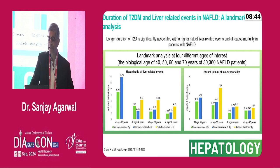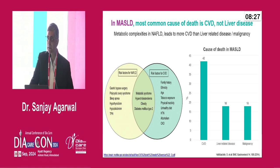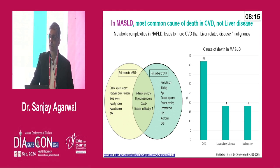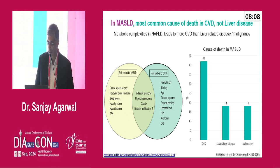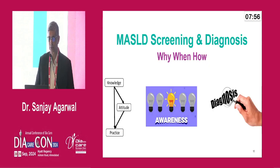Commonly we talk about MASLD and liver disease, but it's important to understand that the most common cause of death is cardiovascular disease, not liver-related events, because there is a commonality of risk factors between MASLD and cardiovascular disease. The overlaps are very high — patients will more commonly die of cardiovascular disease. That's why we must not only deal with the fatty liver disease but also the associated metabolic risk factors, to reduce the cardiovascular risk.